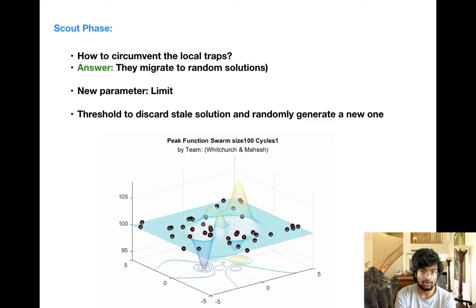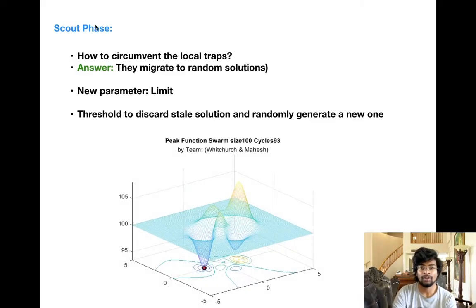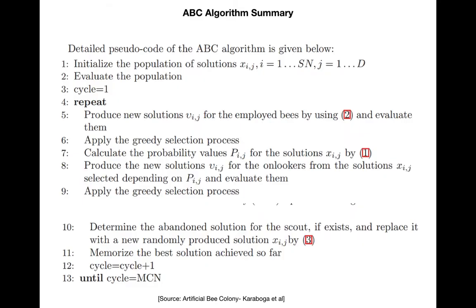We convert that onlooker bee into a scout bee, which is the third phase in this algorithm, and the scout bee randomly migrates to a new solution. Please feel free to pause the video and have a look at the pseudocode for a better understanding of the algorithm.